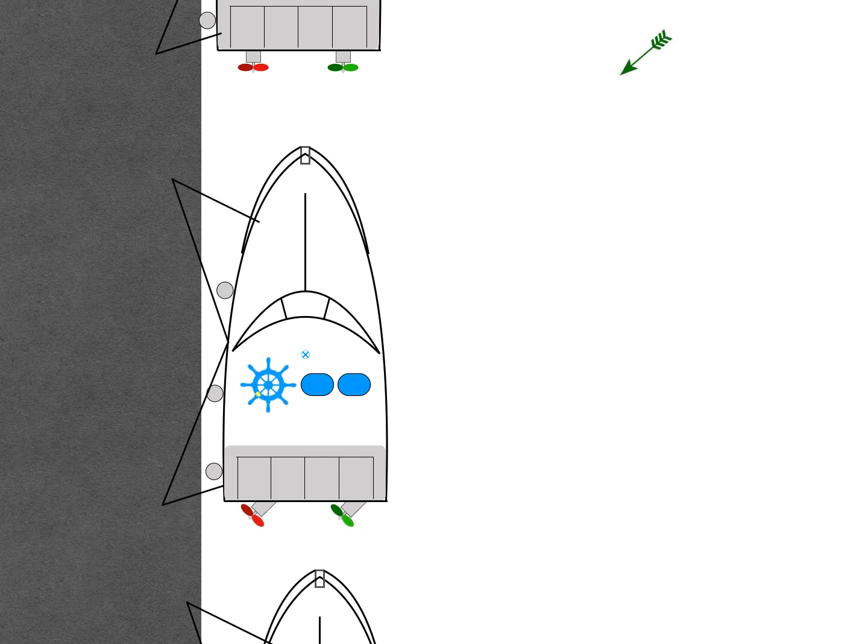Turn the helm fully towards the dock, in our example the port, and select the dock lines. Now put the engine nearest the dock into forward idle and the other engine into reverse idle.